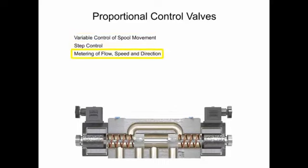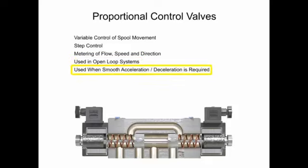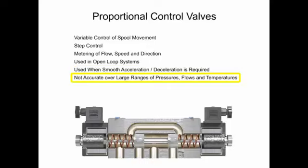Proportional control valves allow for variable control of spool movement, which allows more precise control and metering of flow, speed, and direction. Most valves of this design are used in open loop systems to smoothly accelerate and/or decelerate an actuator or cylinder. However, the proportional control valve is not accurate over a broad range of pressures, flows, and temperatures.